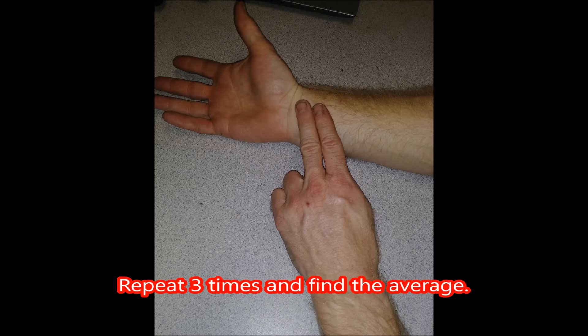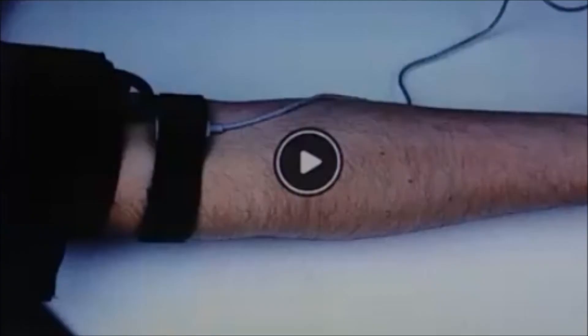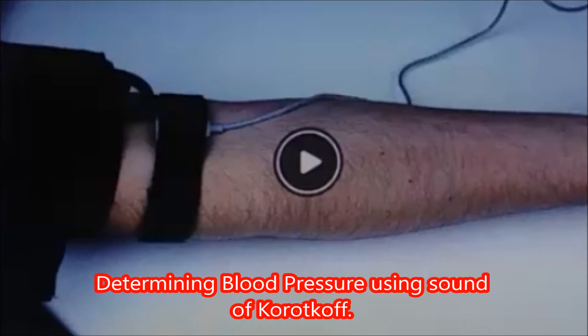Repeat three times and find the average. The following is a data table comparing radial versus apical heart rates. Next, we will be determining blood pressure with the PowerLab using sounds of Korotkoff.